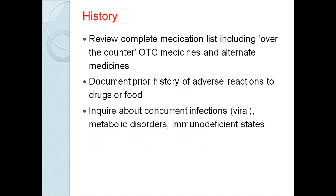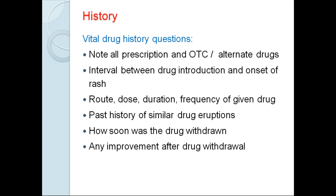Always, drug reactions require a complete history. History is very important, especially in our geographical region where there are many RMPs. People in rural areas tend to go to an RMP first. That is the reason they take multiple drugs — sometimes neighbours will also prescribe. Always take a complete history. We have to review the complete medication list, including over-the-counter medicines, and document prior history of any adverse reaction to food or drugs.